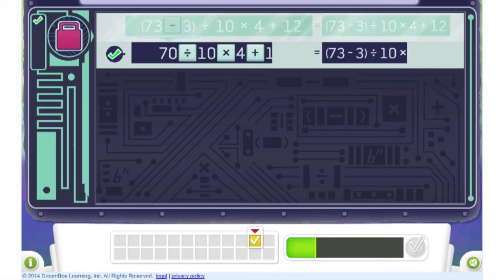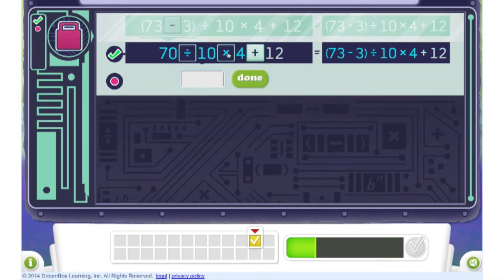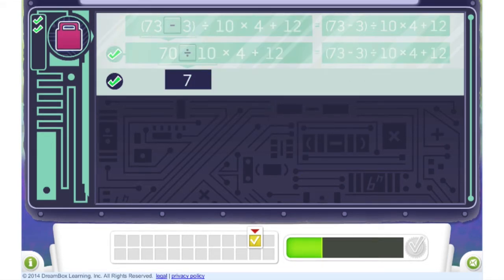But in the next step, we have a problem. PEMDAS would say to multiply first. But division is the correct next step because division is the inverse of multiplication, and we choose multiplicative operations in order from left to right.